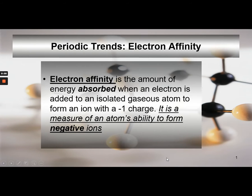Today's trend we're going to look at is electron affinity. Electron affinity is different from ionization energy. Electron affinity is the energy absorbed when an electron is added to an atom to form a negative ion — it's a measure of the atom's ability to form negative ions. Whereas ionization energy is the energy needed to remove an electron to form a positive ion.